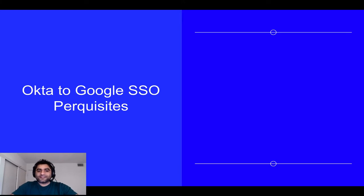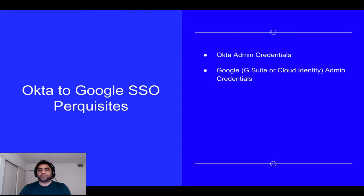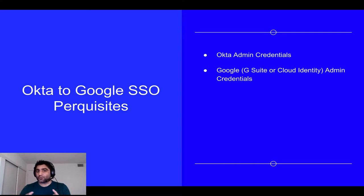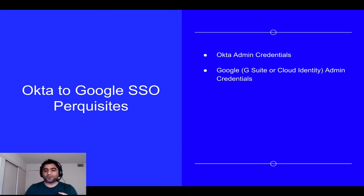A couple of things about logistics: you should have your Okta Admin credentials, as they are required to log in and set up the application. For Google, you should have Super Admin credentials, because Super Administrators in Google are allowed to bypass SSO and directly log in with their Google credentials — which is good, because just in case something goes wrong, we should not be locking ourselves into that troubleshooting flow. So keep the Super Admin credentials with you.